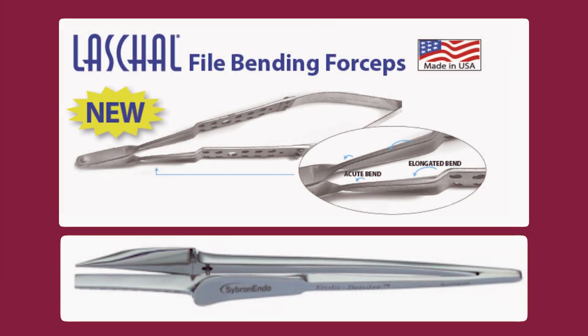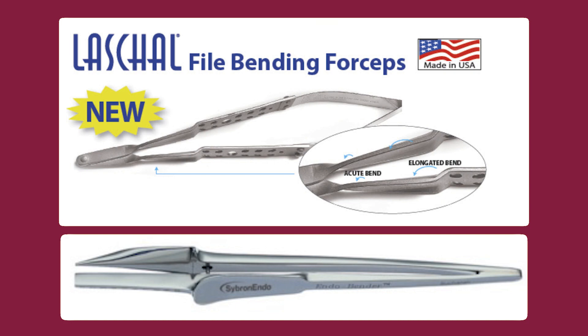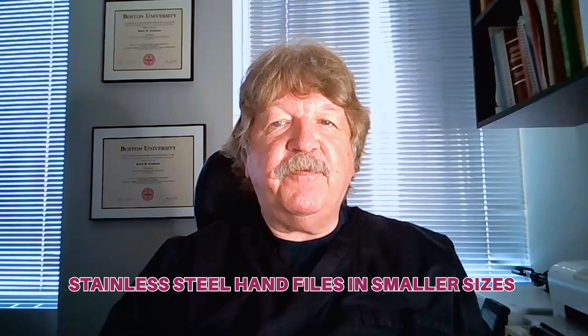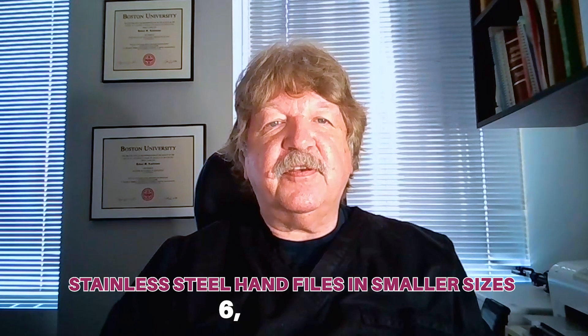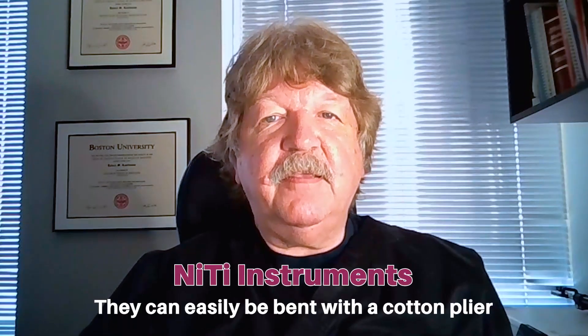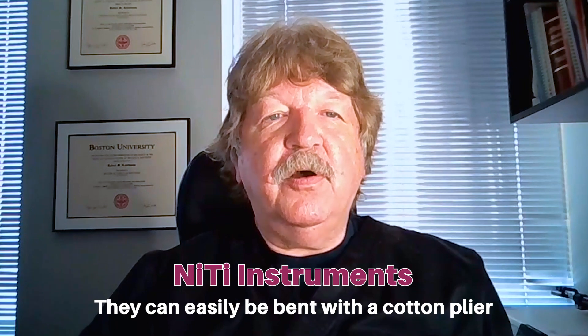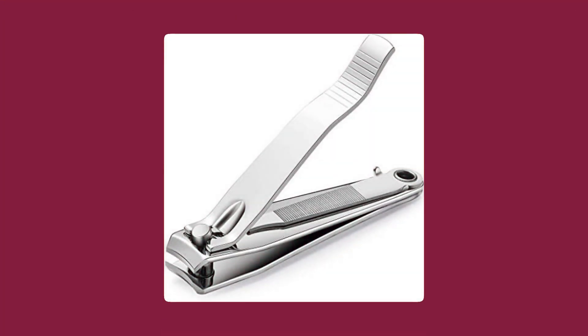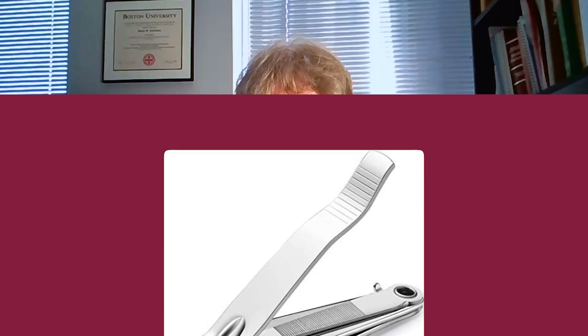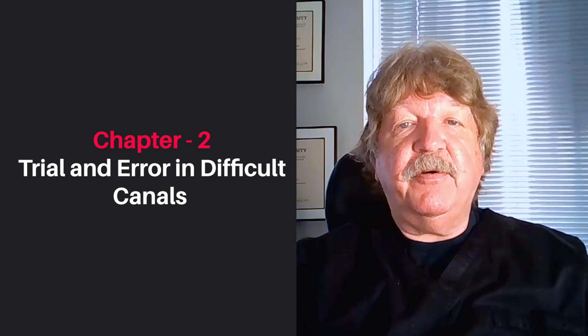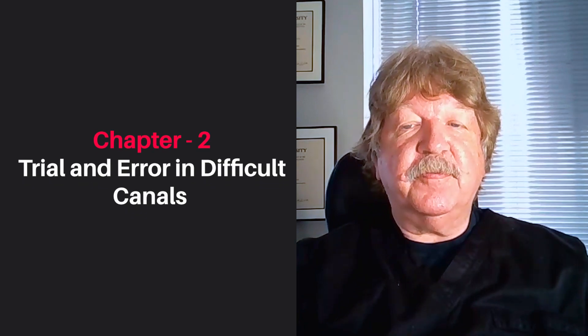There are several expensive commercial instruments available to assist you to do this. I still prefer stainless steel hand files in the smaller sizes of 6, 8, and 10. Unlike nitide instruments, they can easily be bent with a cotton plier or, if a smaller bend is required, something like a pair of nail clippers whose edges have been dulled to prevent the cutting of the file. Thanks to Dr. Gary Carr for that tip.